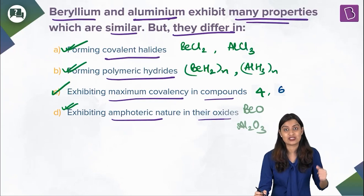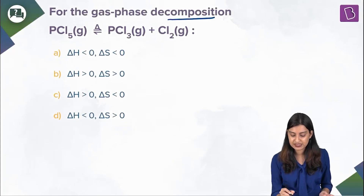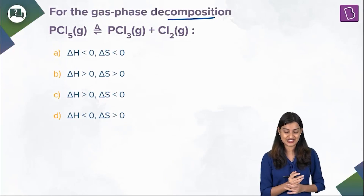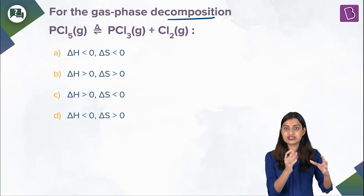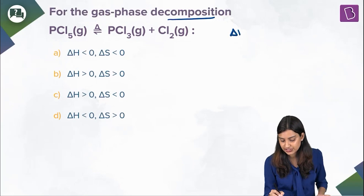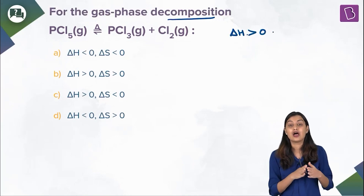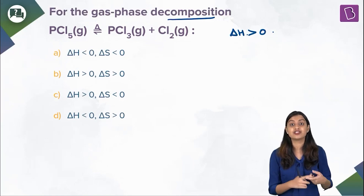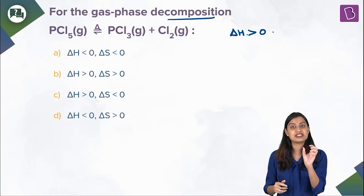Here, for a gas phase decomposition, PCl₅ decomposes to give PCl₃ plus Cl₂. What happens to ΔH and ΔS in this reaction? Basically, you are heating up the initial system — PCl₅ was your initial system and you heated it up, because of which there is a change in ΔH. ΔH increases, so ΔH is definitely greater than zero.